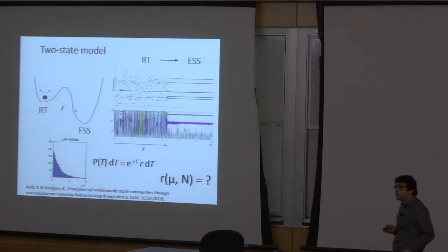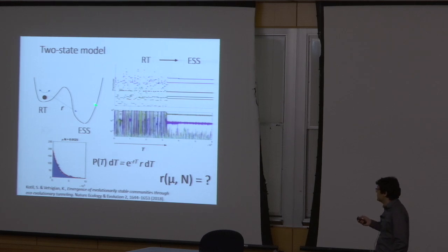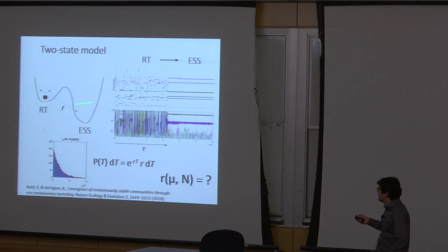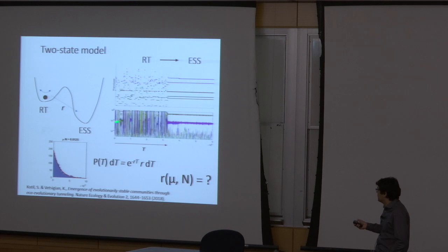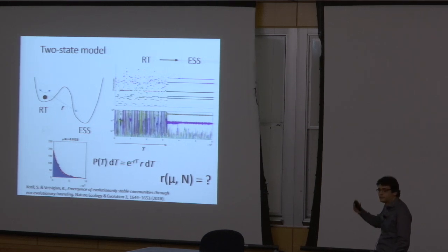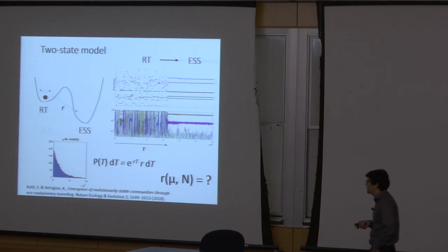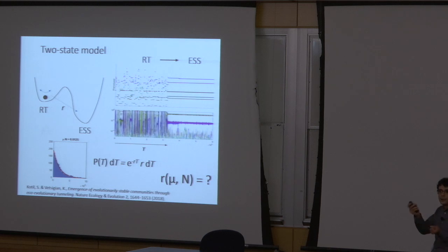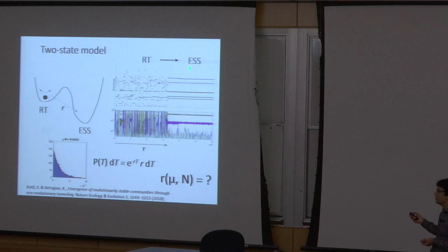This led to a simple two-state model: two phases — the rapid turnover phase is metastable and wants to transition to the evolutionarily stable phase, but there's a barrier and you need to tunnel through it. This is confirmed by looking at statistics: running many simulations in parallel, the probability distribution of community-formation times is exponential — exactly like radioactive decay. The entire process, as complicated as it is, can be quantified by a single parameter: the rate r, the probability per unit time that the rapid-turnover phase transitions to the evolutionarily stable community.